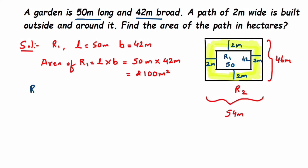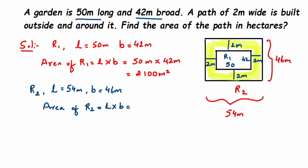Similarly, for rectangle R2, length is 54 meters and breadth is 46 meters. Area of R2 equals length multiplied by breadth, so 54 meters multiplied by 46 meters gives us 2484 square meters.